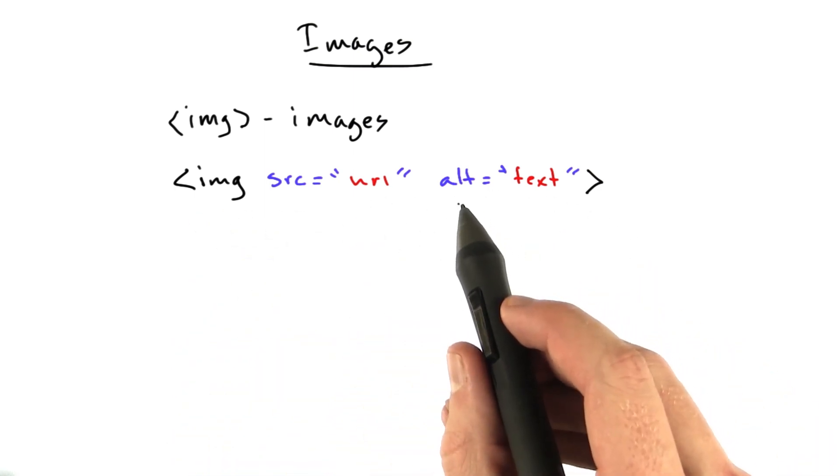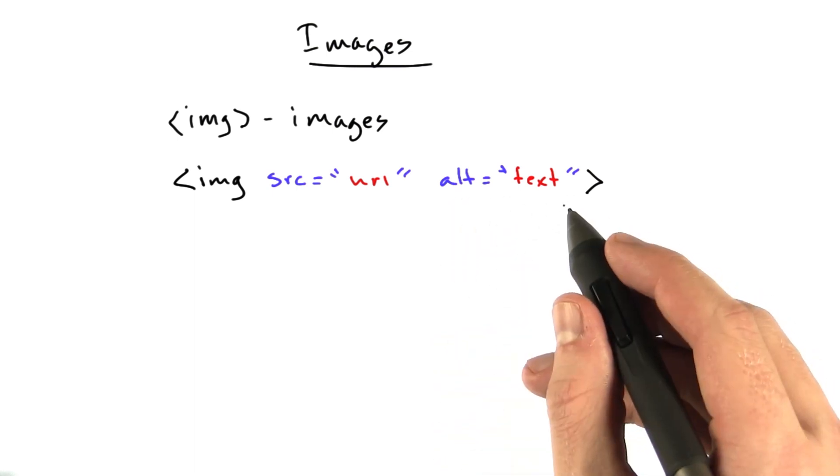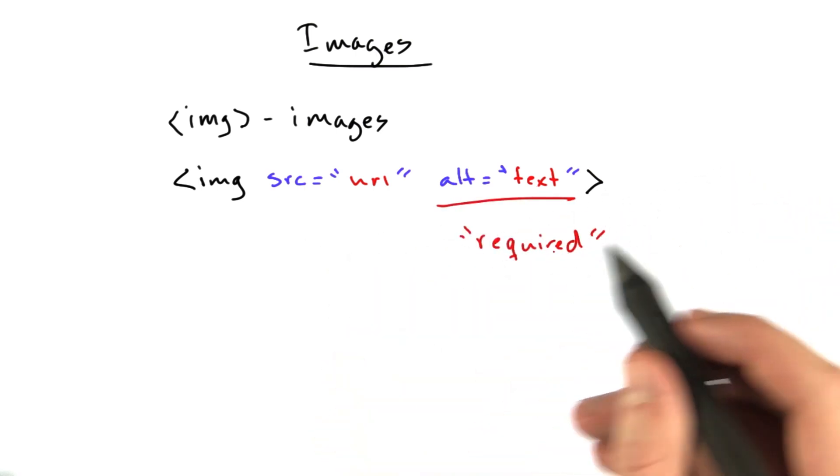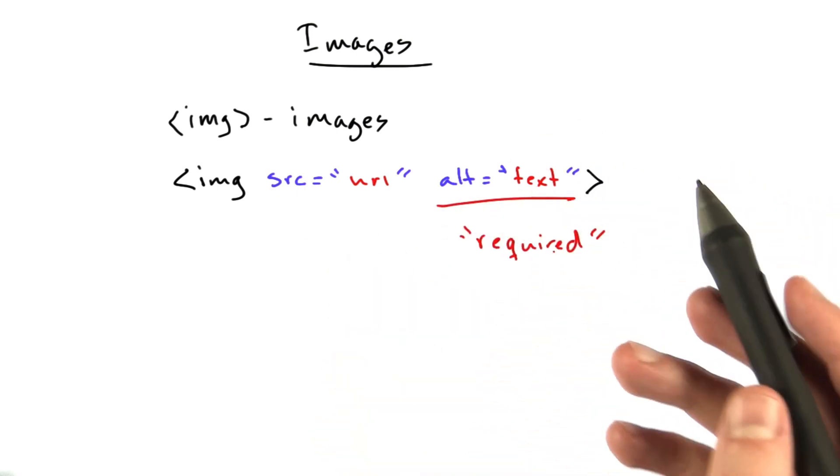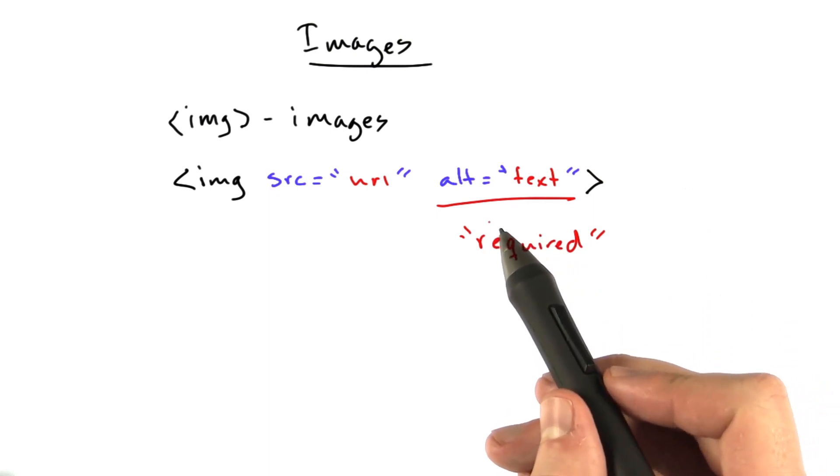And then there's another attribute called alt, which stands for alternate, and this is text that gets displayed when the image doesn't load. It's required in the sense that HTML parsers will complain at you if it's not there. Nothing will break,